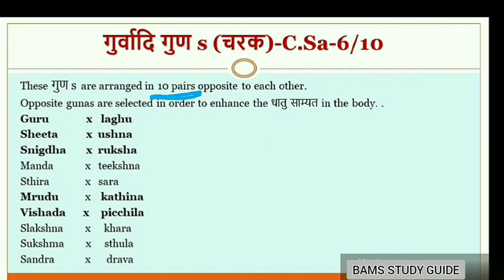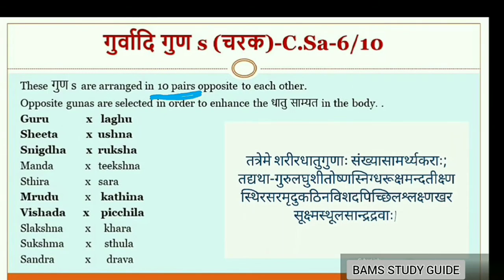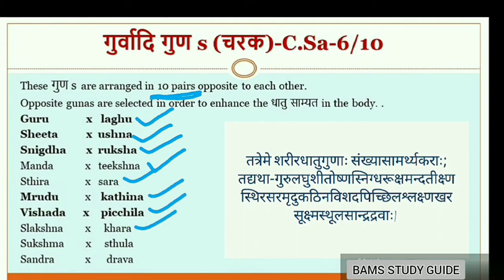The 20 Gurvādi Gunas in pairs are: Guru–Laghu, Shita–Ushna, Snigdha–Ruksha, Mandha–Tikshna, Sthira–Sara, Mridhu–Kadhina, Vishada–Pichila, Slakshna–Khara, Sukshma–Sthula, and Sandhra–Drava. Charaka explained these in Charaka Sharira 6th chapter, 10th Shloka.